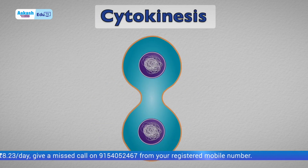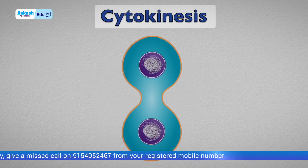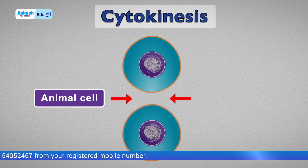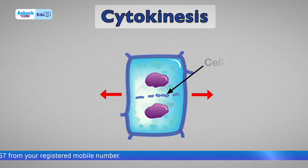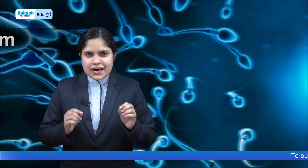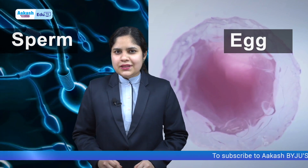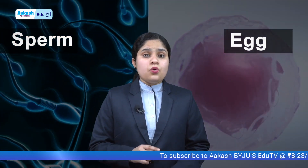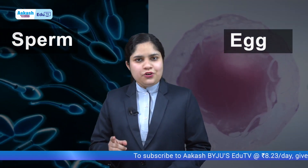Cytokinesis happens by the furrow method in animal cells and the cell plate method in plant cells. Now you have a question: do sperm and egg undergo the same process? We will answer that in the next video.